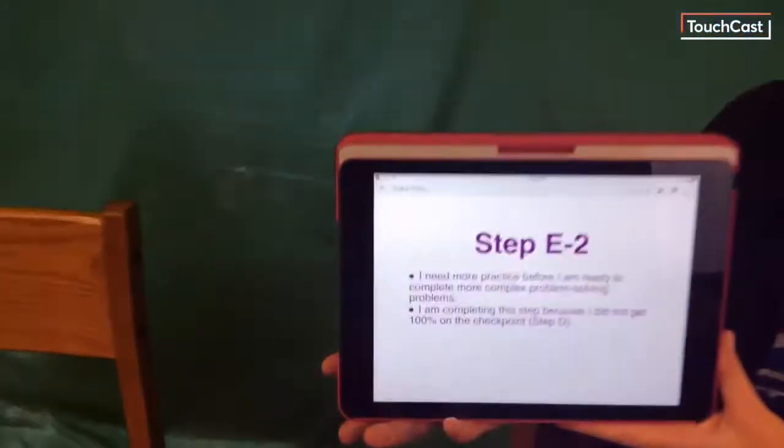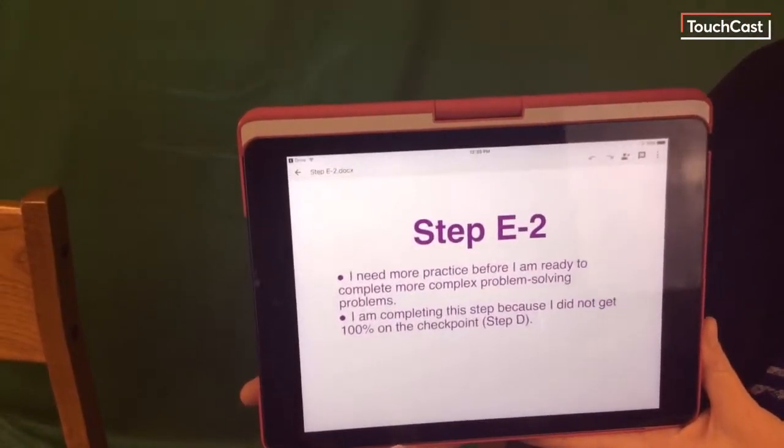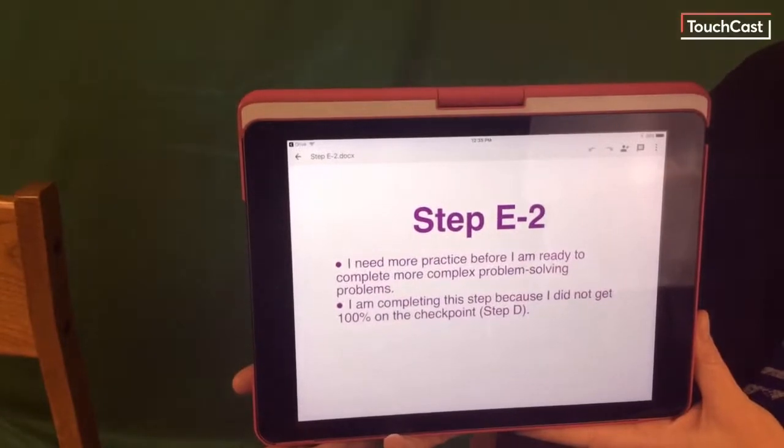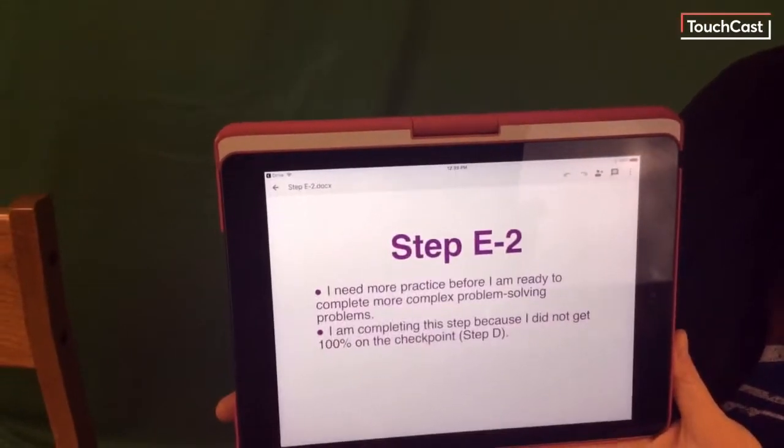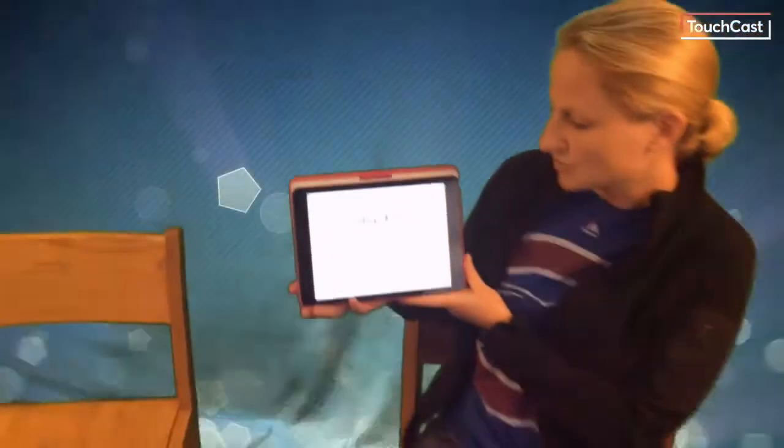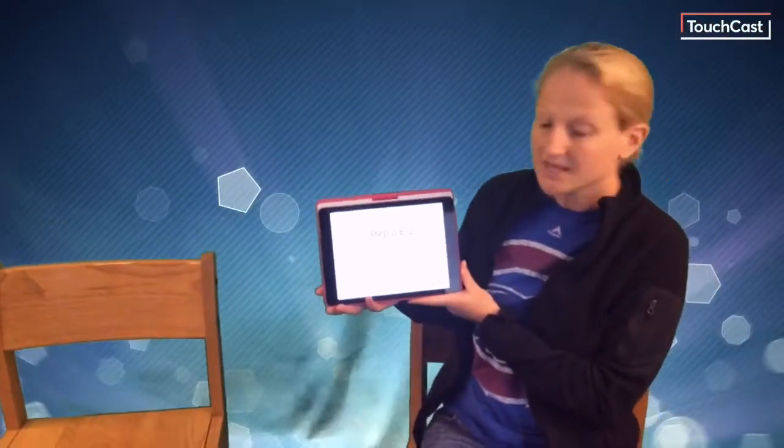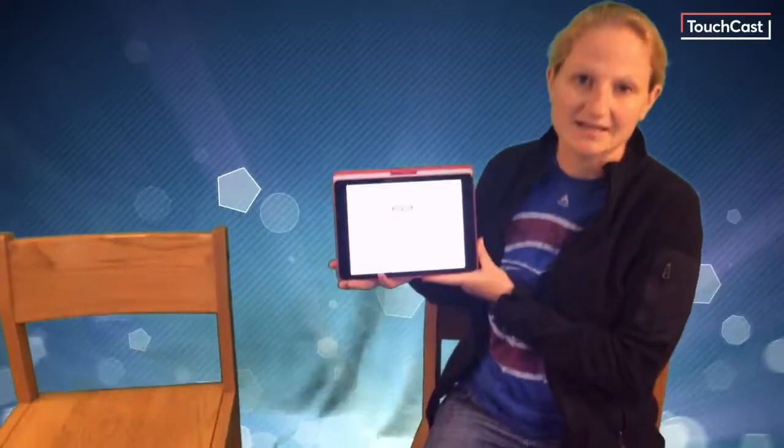Okay, so if you get any wrong on the D-step, the first thing you're going to do is step E2. And what that means is that you're going to need more practice before you're ready to complete more complex problem solving related to the concept you're working on. And the reason that you would be doing the E2 step is either because your teacher feels that it's the best one for you to do next or because you did not get 100% on the D-step.